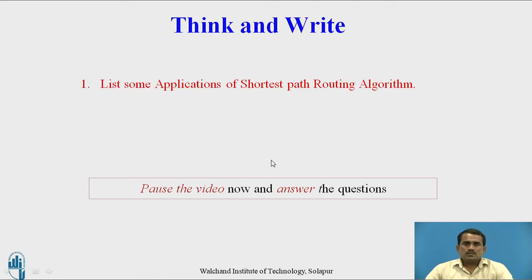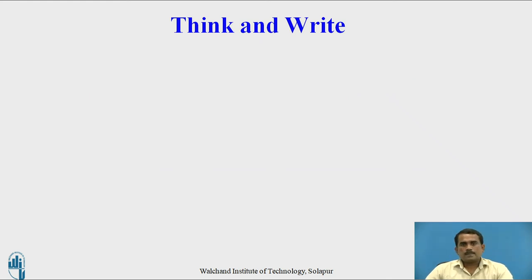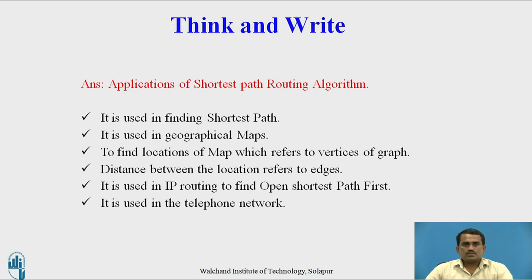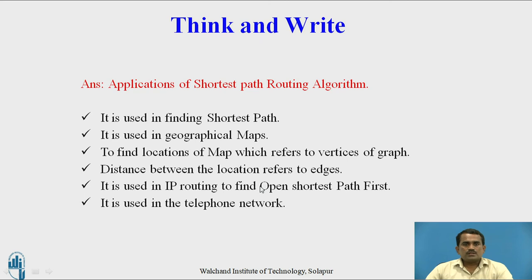Here is a question: list some applications of the shortest path algorithm. Pause the video and answer the above question. The applications of the shortest path routing algorithm are: it is used in finding the shortest path; it is used in geographical maps to find locations, where locations refer to vertices of a graph and distances between locations refer to edges; it is used in IP routing to find Open Shortest Path First; and it is used in telephone networks for finding the path.